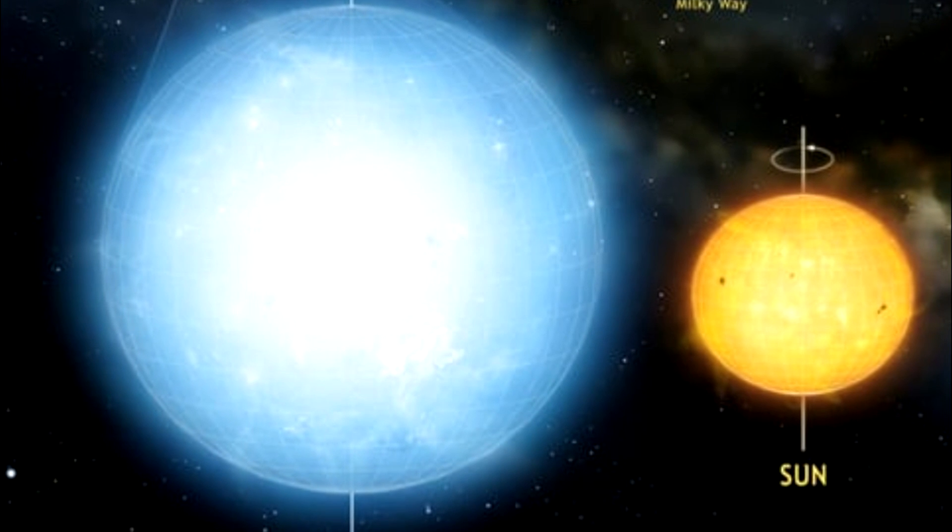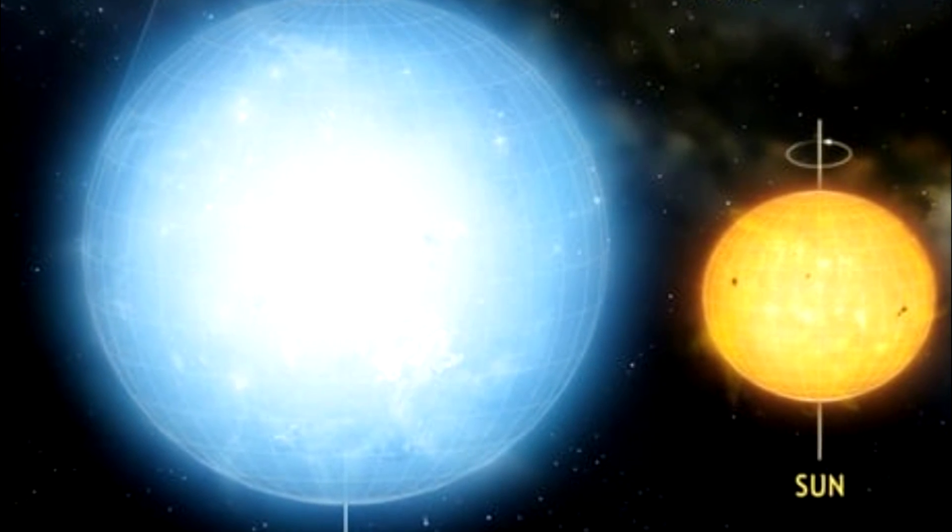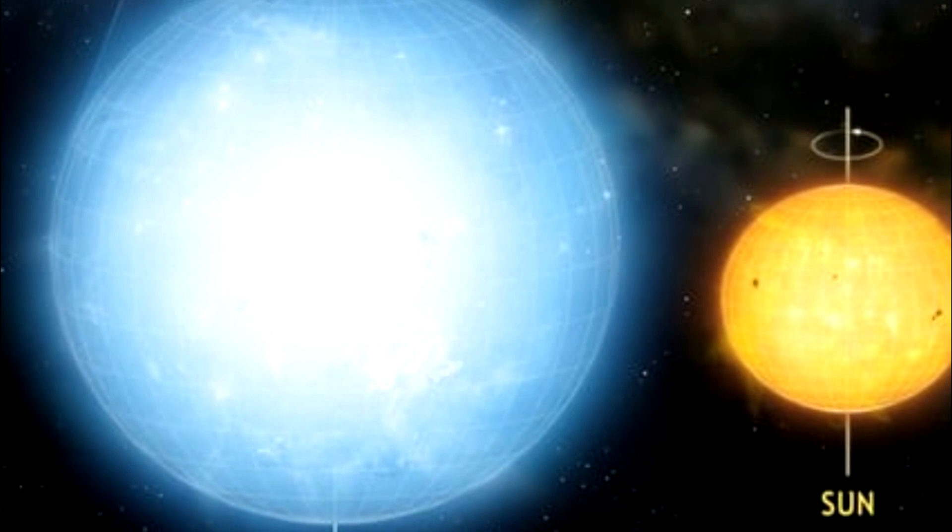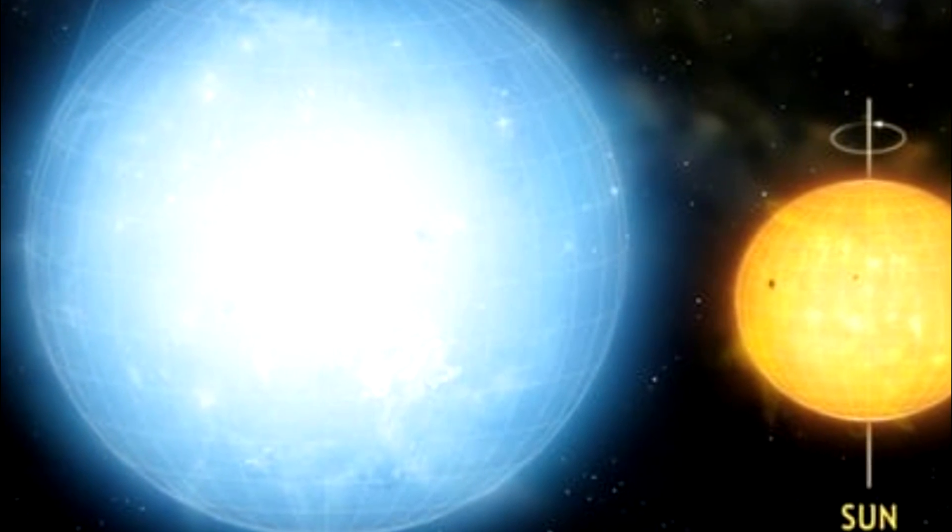When geographers say the Earth is round, they mean it's sort of round and a bit squashed at the poles. There are, as it turns out, much rounder things out there.